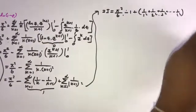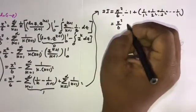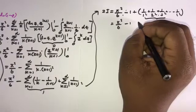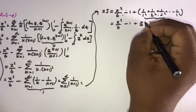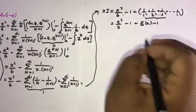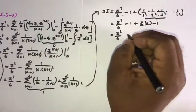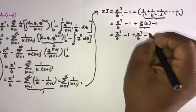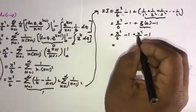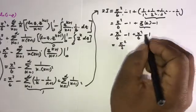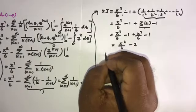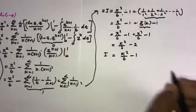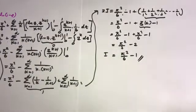We know ζ(2) equals π²/6, so 2I equals π²/6 minus 1 plus π²/6 minus 1, which gives π²/3 minus 2. Therefore I equals π²/6 minus 1. This is the answer. If you like this video, please subscribe to the channel. Thank you for watching.